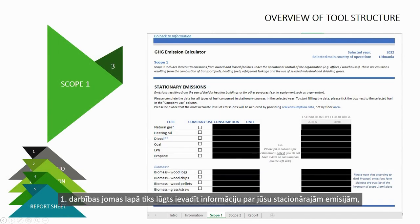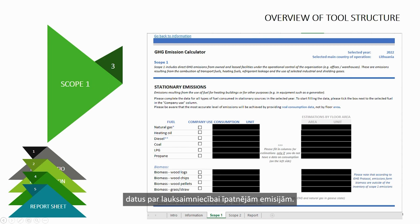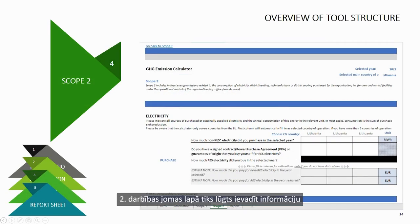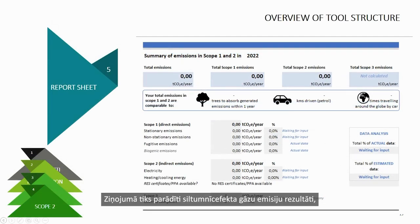The Scope 1 sheet will ask you to input information regarding your stationary, non-stationary, and fugitive emissions, and if your company operates in the agricultural sector, data for agriculture-specific emissions. The Scope 2 sheet will ask you to input information regarding your electricity and heating or cooling usage. Finally, the report will show the results of GHG emissions and will not require input of any additional data.